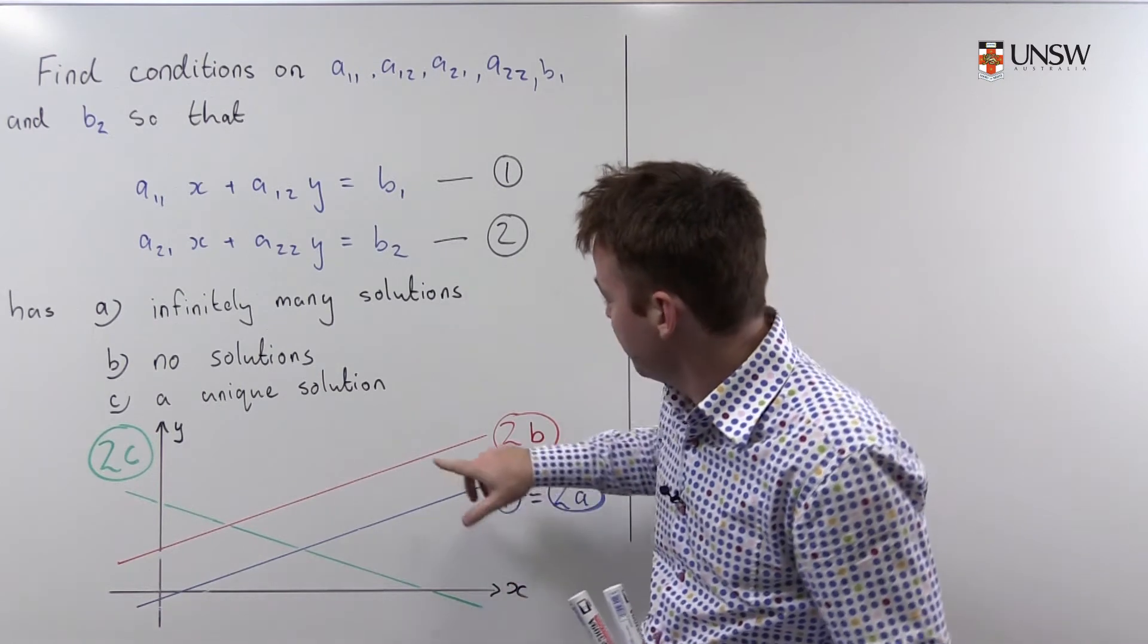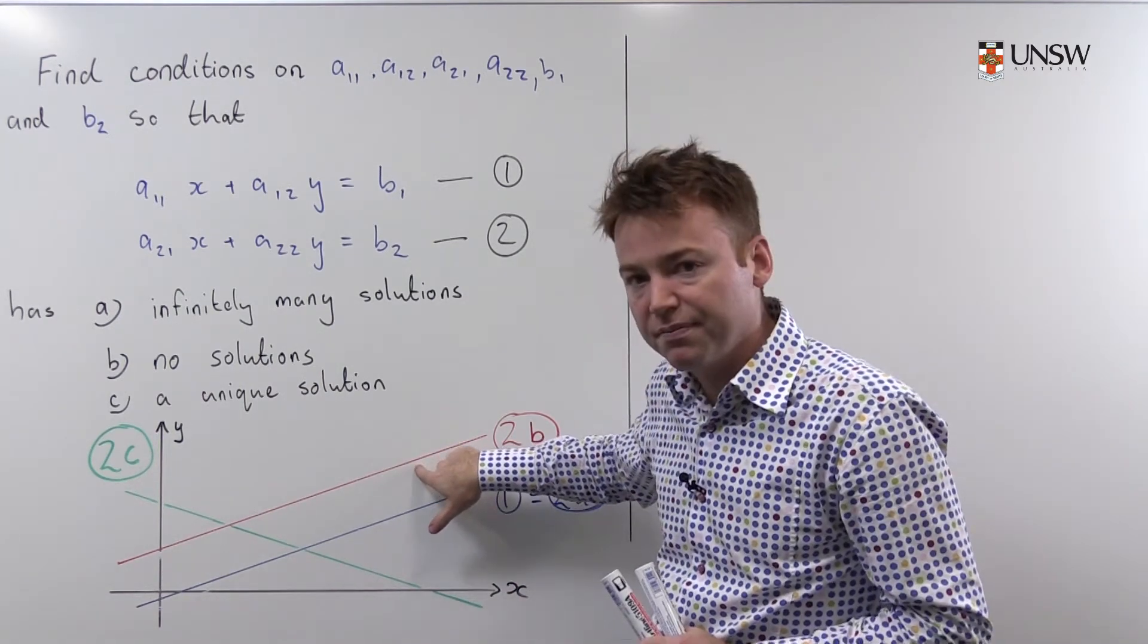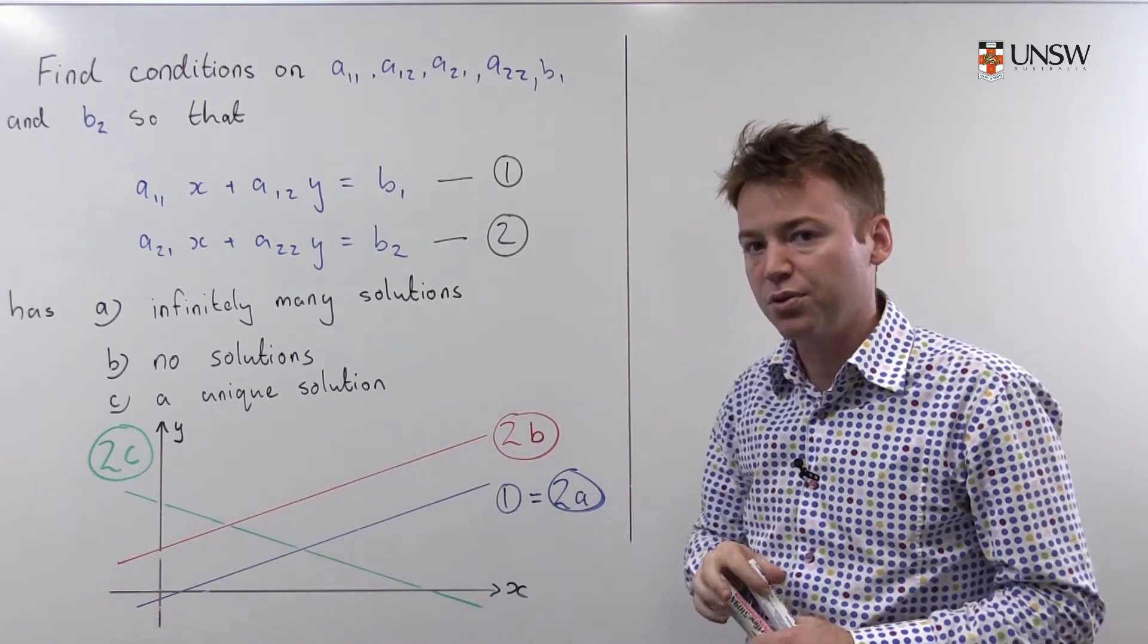The second scenario is what happens if you take line one as the blue line and line two as the red line. These lines never intersect and so you end up with no solutions.